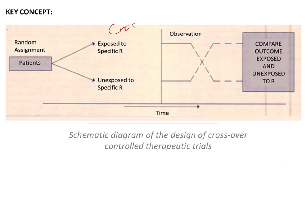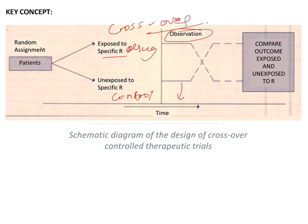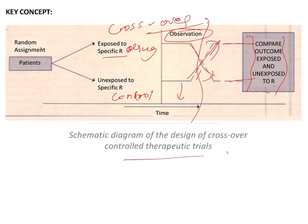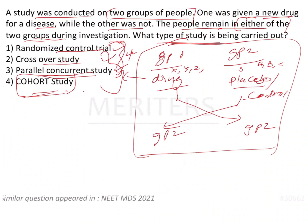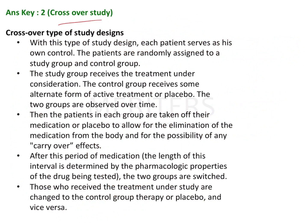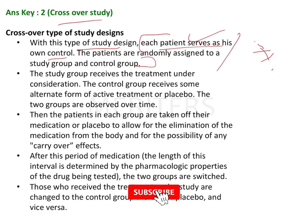The crossover study is explained in the schematic diagram here. Patients are exposed to a drug, then after a period of observation they crossover — group A converts to group B and group B converts to A. Outcomes are then compared between exposed and unexposed. Each patient serves as their own control.